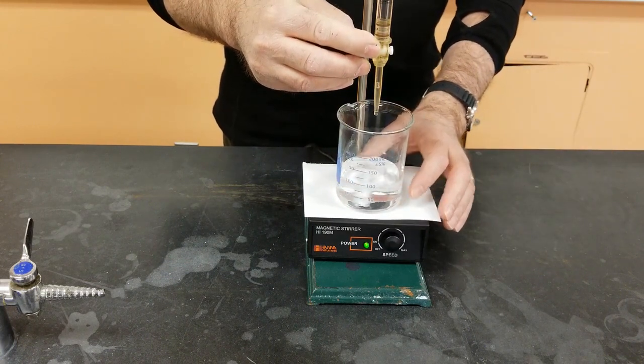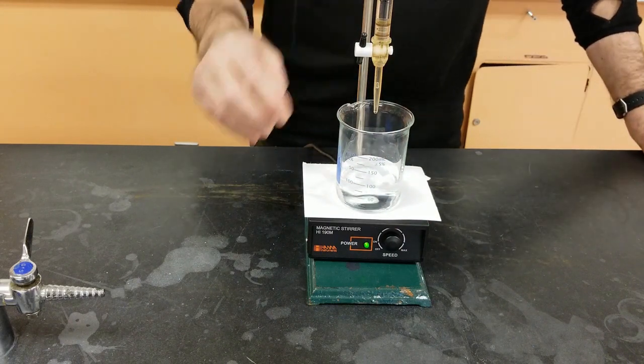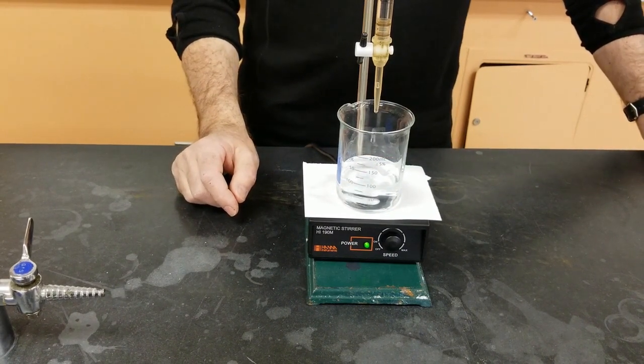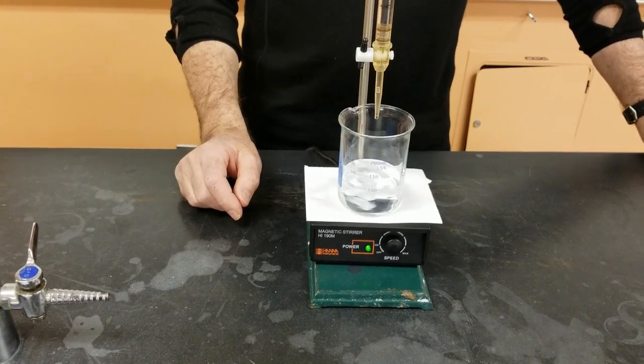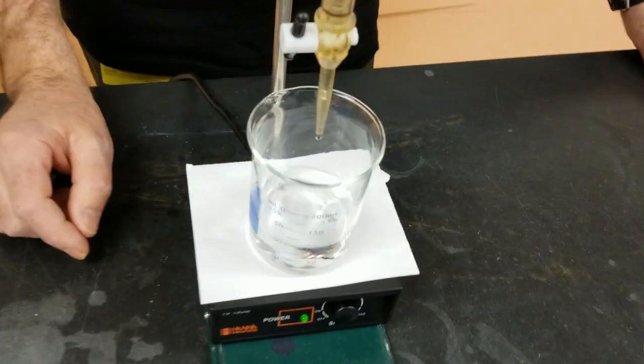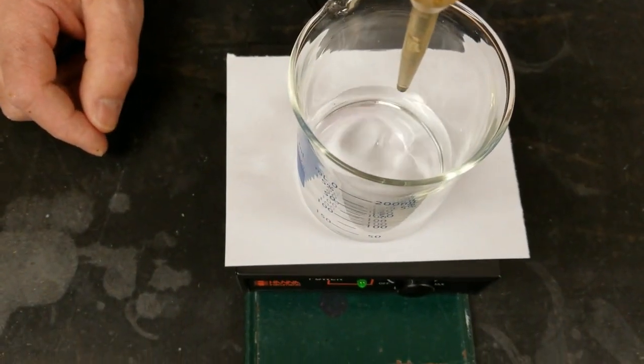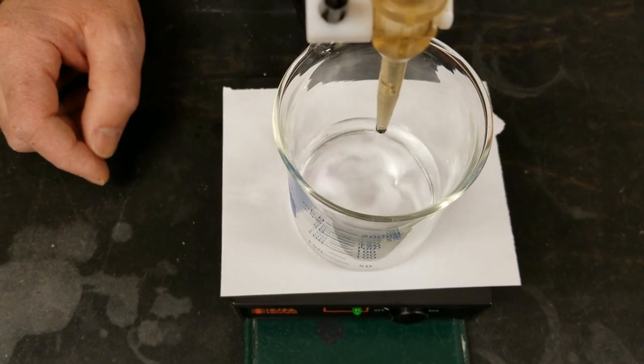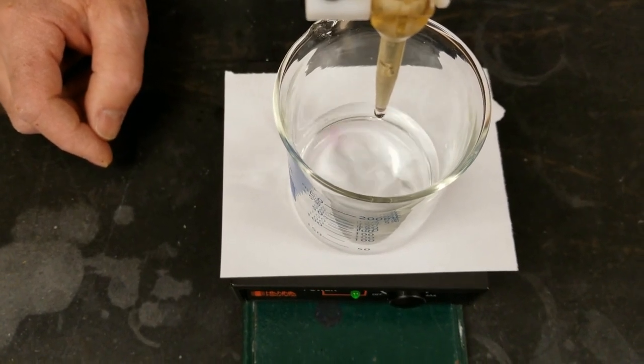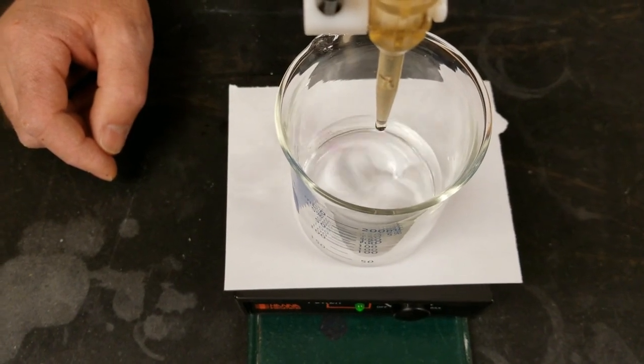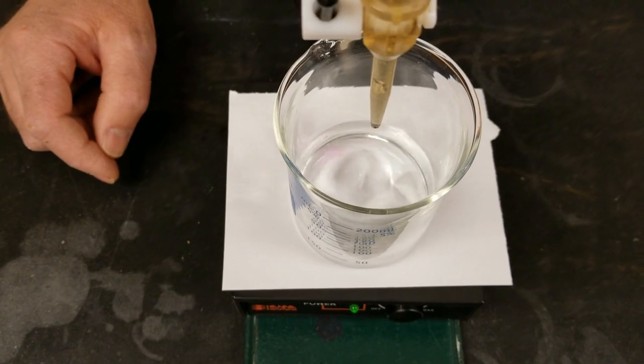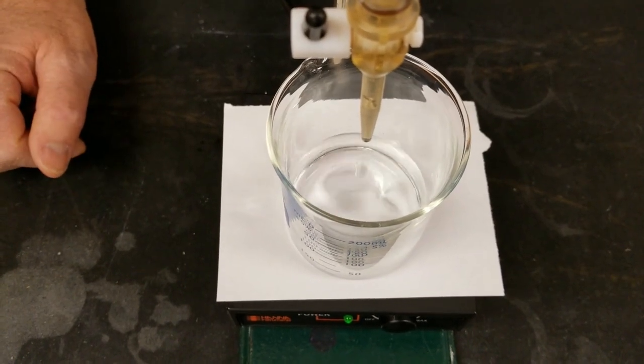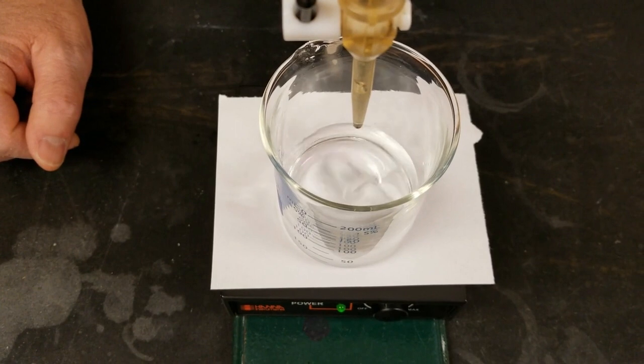And what you'll notice here if you were to get right up over this looking down into the beaker is that where the OH- is dropping into the acid, we're getting little flashes of pink because there's lots of OH- until it disperses. But it disperses very quickly at this point because the amount of OH- is far below the amount of H+ that's available from the KHP.